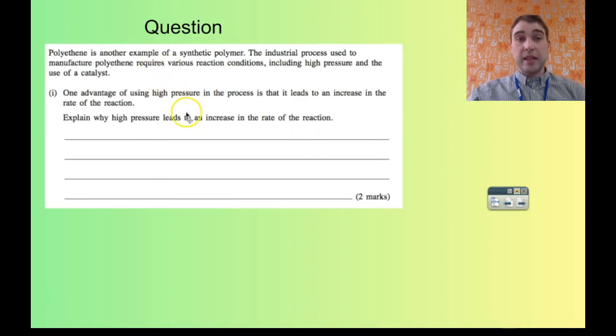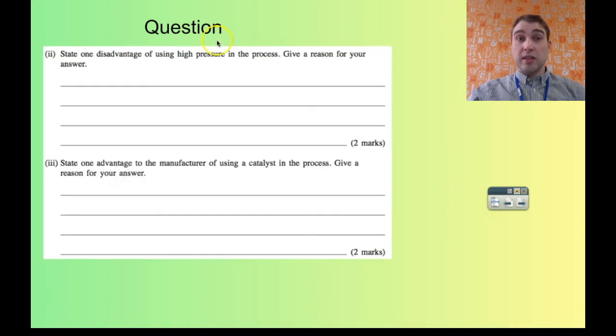The next question is about production of polyethene. I already answered the high pressure part of it in a separate video. And I'll put the link down here. The second part of that question I didn't answer in the other video, so I'll answer it now. It says, state one disadvantage of using high pressure. High pressure requires energy. To increase the pressure of a gaseous system, you need to put energy in. And that can be quite costly. It also can be dangerous. Having high pressure gases in sealed containers, if those seals blow, then you can have explosions. So it can be quite dangerous for the employees.